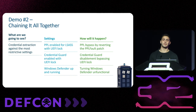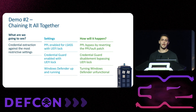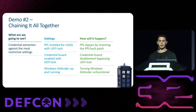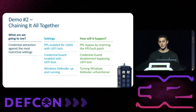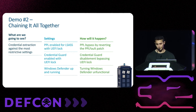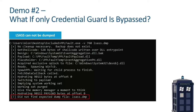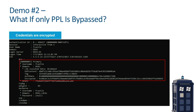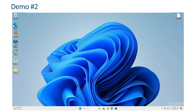Now it's time for a demo chaining all capabilities together: credential extraction against the most restrictive settings. Settings include PPL enabled for LSASS with UEFI lock protecting LSASS dumps, Credential Guard enabled with UEFI lock protecting secrets in VTL1, and Windows Defender up and running. The bypass chain is: first, revert the PPL fault patch to allow PPL bypass; second, disable Credential Guard by bypassing the UEFI lock; third, turn Windows Defender non-functional by invalidating the main Defender executable MSMpEng. Note that Credential Guard and PPL for LSASS are complementary — if only Credential Guard is bypassed, LSASS cannot be dumped; if only PPL is bypassed, credentials are encrypted and not usable.